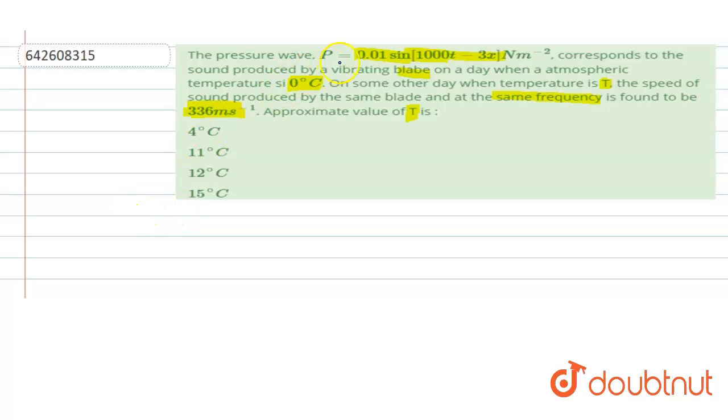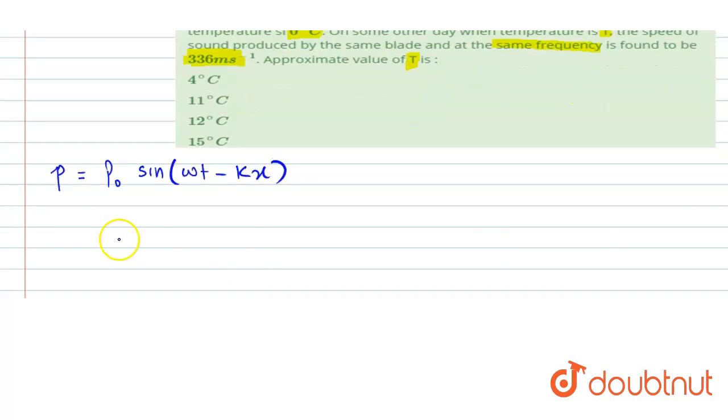Let's understand the concept. We are given the equation of the pressure wave which is in the form of P equals P₀ sine of ωT minus KX. And as we know, the speed of sound is given by ω by K.